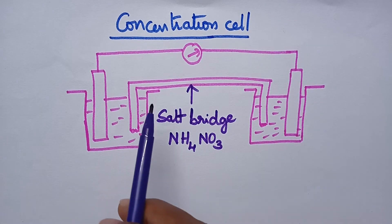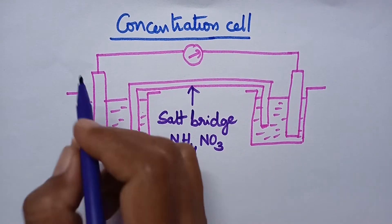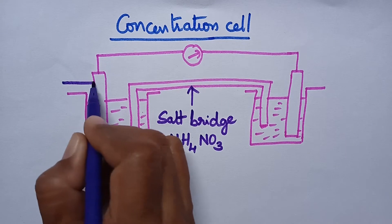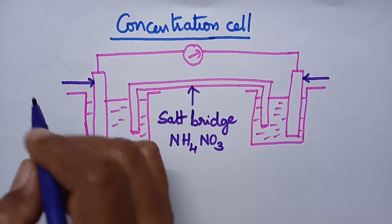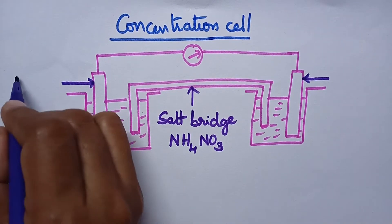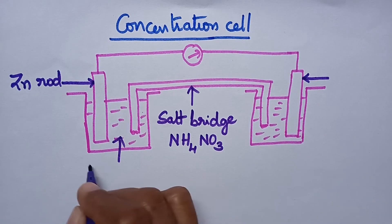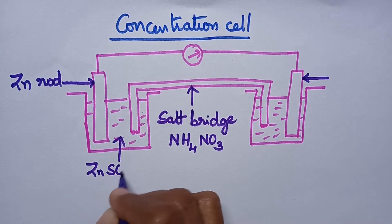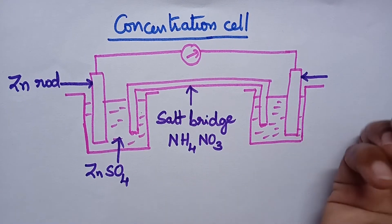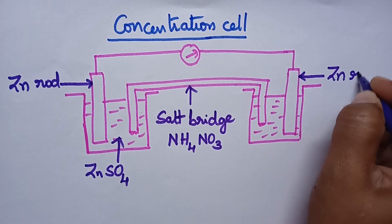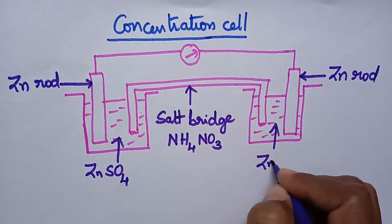The difference between the concentration cell and the galvanic cell is that here both the electrodes are made up of the same material. Let us consider the electrode is made up of zinc. So a zinc rod is dipped in zinc sulfate solution. On the other hand, it also consists of a zinc rod dipped in zinc sulfate solution.